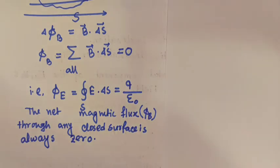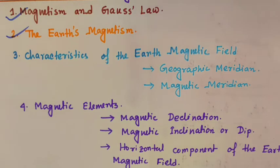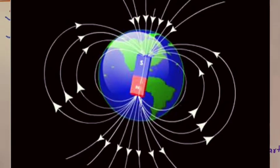Our second topic is Earth's magnetism. In the year 1600, Sir William Gilbert was the first to suggest that the earth itself is a huge magnet — the earth behaves as if a powerful magnet is placed within it. The magnetic field of the earth is now thought to arise due to electrical currents produced by convective motion of metallic fluids consisting mostly of iron and nickel in the outer core of the earth.